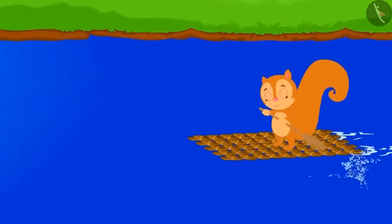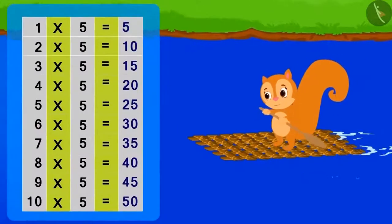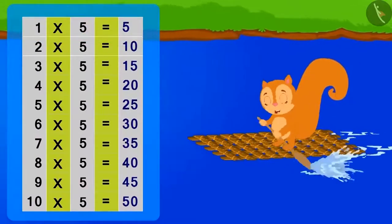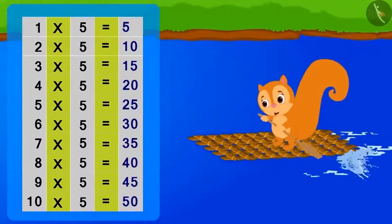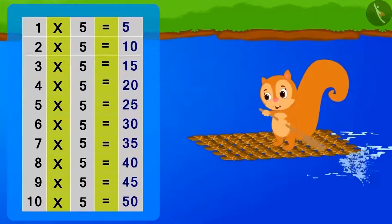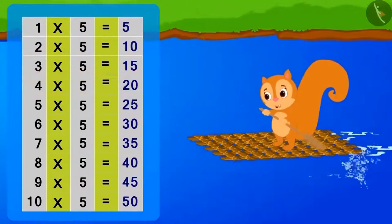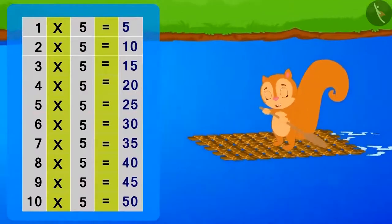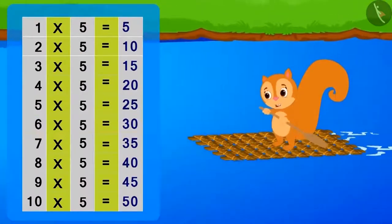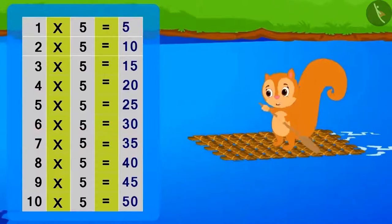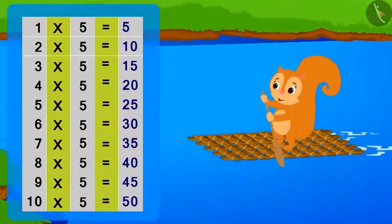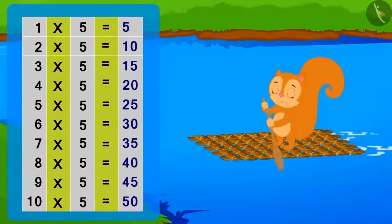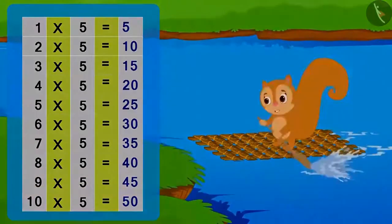Chanda sailed her boat on the river humming the table of five: five ones are five, five twos are ten, five threes are fifteen, five fours are twenty, five fives are twenty-five, five sixes are thirty, five sevens are thirty-five, five eights are forty, five nines are forty-five, five tens are fifty.